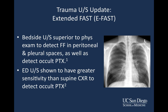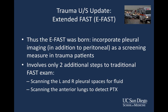Now let's talk about the extended FAST exam, otherwise known as the E-FAST. Bedside ultrasound has been demonstrated to be superior to physical exam for detecting free fluid in peritoneal and pleural spaces, as well as detecting occult pneumothorax. It has greater sensitivity than supine chest X-ray to detect occult pneumothoraces. The E-FAST incorporates pleural imaging in addition to peritoneal and cardiac imaging. It involves only two additional steps to the basic FAST exam: scanning the left and right pleural spaces to look for fluid, namely hemothorax, and scanning the anterior lungs to detect pneumothoraces.